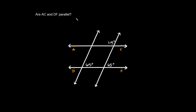Again, we're trying to figure out if AC and DF are parallel. Here it gives us 115 degrees, so that means the supplement is 65 degrees. Now using supplementary angles again, the supplement to 65 degrees on the other side would be 115 degrees. So now we just found one of our four theorems — these two angles, 65 and 115, are consecutive interior angles. They're both interior angles on the same side of this transversal, and consecutive interior angles are supposed to add up to 180 degrees. Does 65 plus 115 equal 180? Yes it does — so AC and DF are parallel.